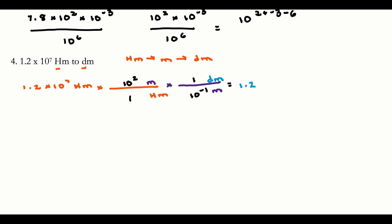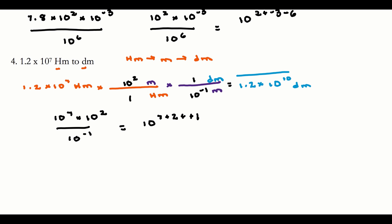My answer will be 1.2 times 10 to some power. I have 10 to the seventh times 10 to the second, divided by 10 to the negative first. Multiplying adds exponents: 7 plus 2 equals 9. Then dividing by 10 to the negative first means subtracting negative one, which adds one: 9 plus 1 equals 10. So my final answer is 1.2 times 10 to the tenth decimeters.